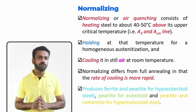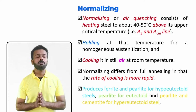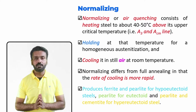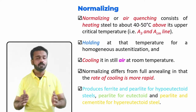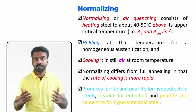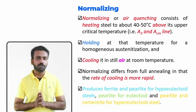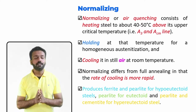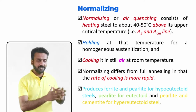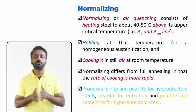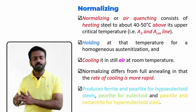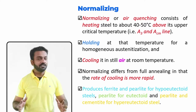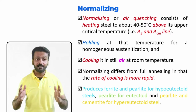For normalizing, the steel is heated above the A3 line and Acm line. Unlike annealing, where hyper-eutectoid steel is heated just above A1, in normalizing both hypo and hyper-eutectoid steels are heated into the range where the entire structure is austenite. At room temperature after normalizing, hypo-eutectoid steel gives ferrite and pearlite, eutectoid steel gives pearlite, and hyper-eutectoid steel gives pearlite and cementite.